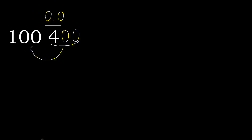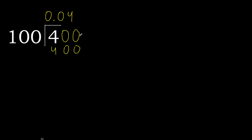400 is not less, therefore with 400. Here, 100 multiplied by which number is nearest to 400 but not greater? 100 multiplied by 4 is 400, is not greater. 400 minus 400 is 0, therefore finish it.